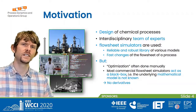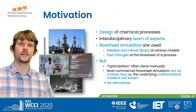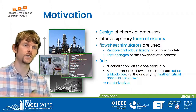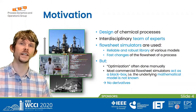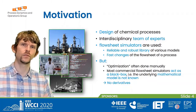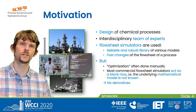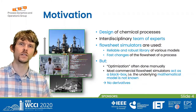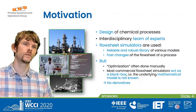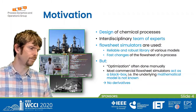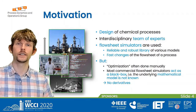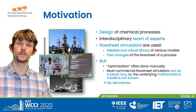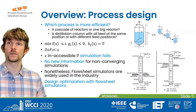However, in industry a lot of optimization is done manually by just changing some parameters, because it is easier than doing optimization with flow sheet simulators. They act as a black box — the underlying mathematical model is not known — so we are restricted to derivative-free optimization algorithms.